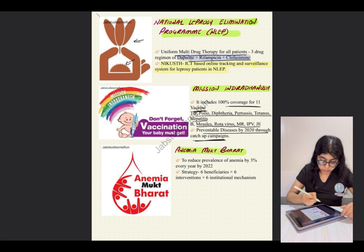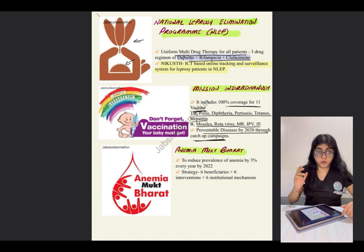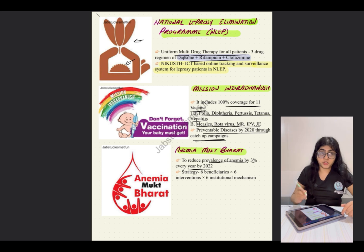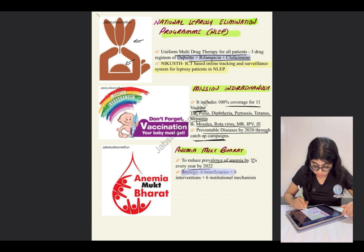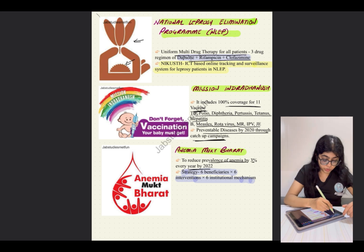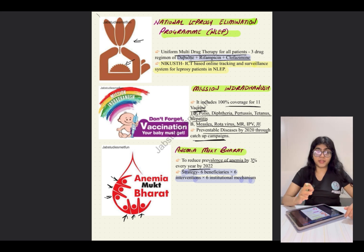For Anemia Mukt Bharat, the logo is very important. The objective is to reduce the prevalence of anemia by 3% every year by 2022. The strategy, which has been asked before, is 6-6-6: six beneficiaries, six interventions, and six institutional mechanisms. The logo shows a blood drop with six individuals, helping you remember both the strategy and the logo.